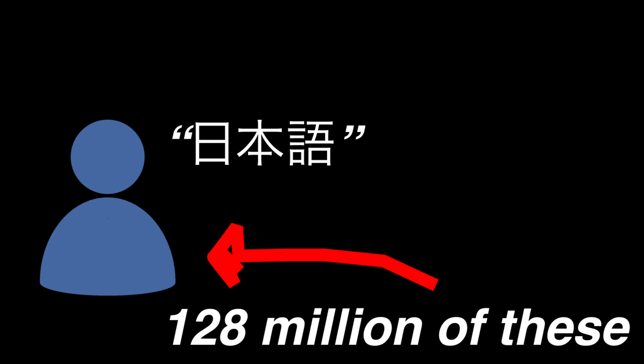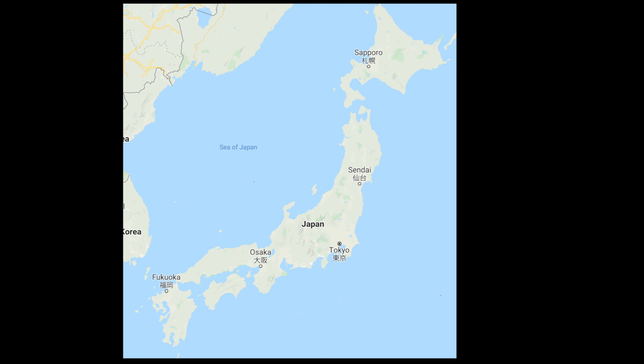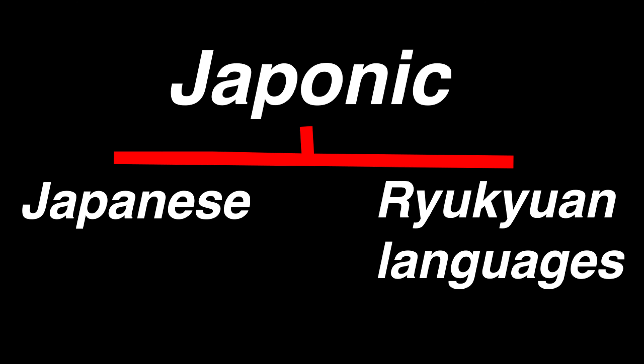Japanese is spoken by 128 million people, mainly in Japan where it's the official language. It's also spoken in diaspora, mainly in China and Korea.